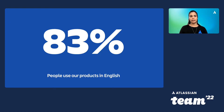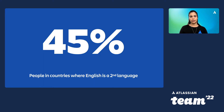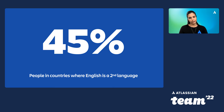At Atlassian, 83% of people who use our products use them in English. But more interestingly, 45% of those people are actually in countries where English is spoken as a second language. That's an interesting conundrum — how do you go about communicating with, writing for, and making this global group of people feel included? It's more than just about being able to put things into Google Translate.